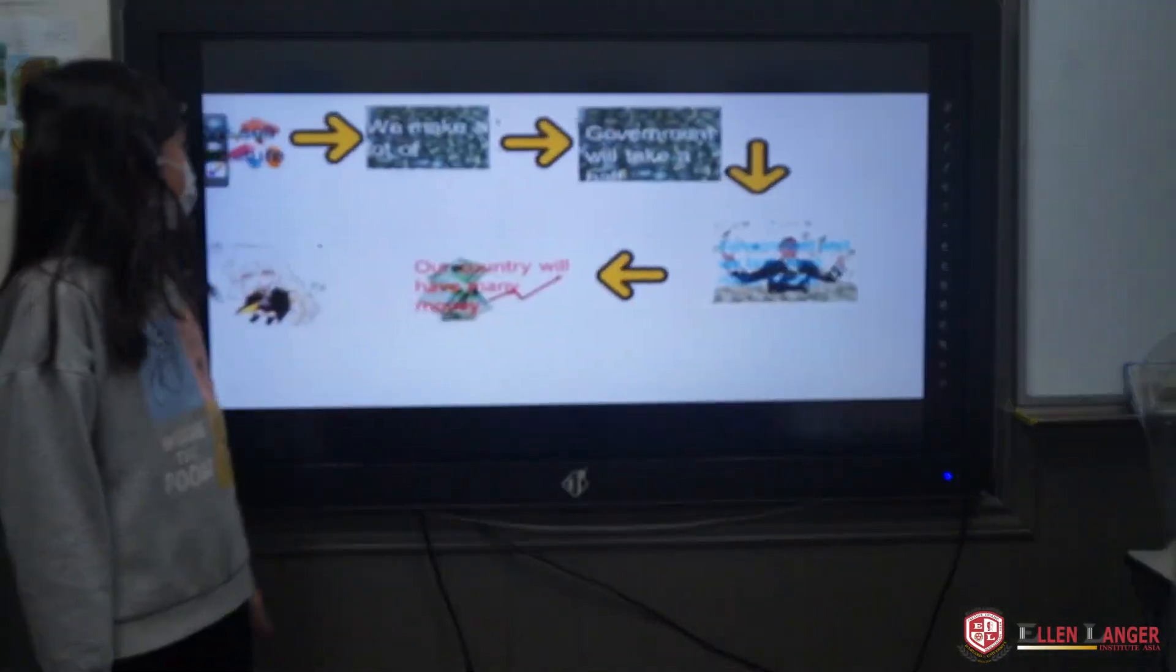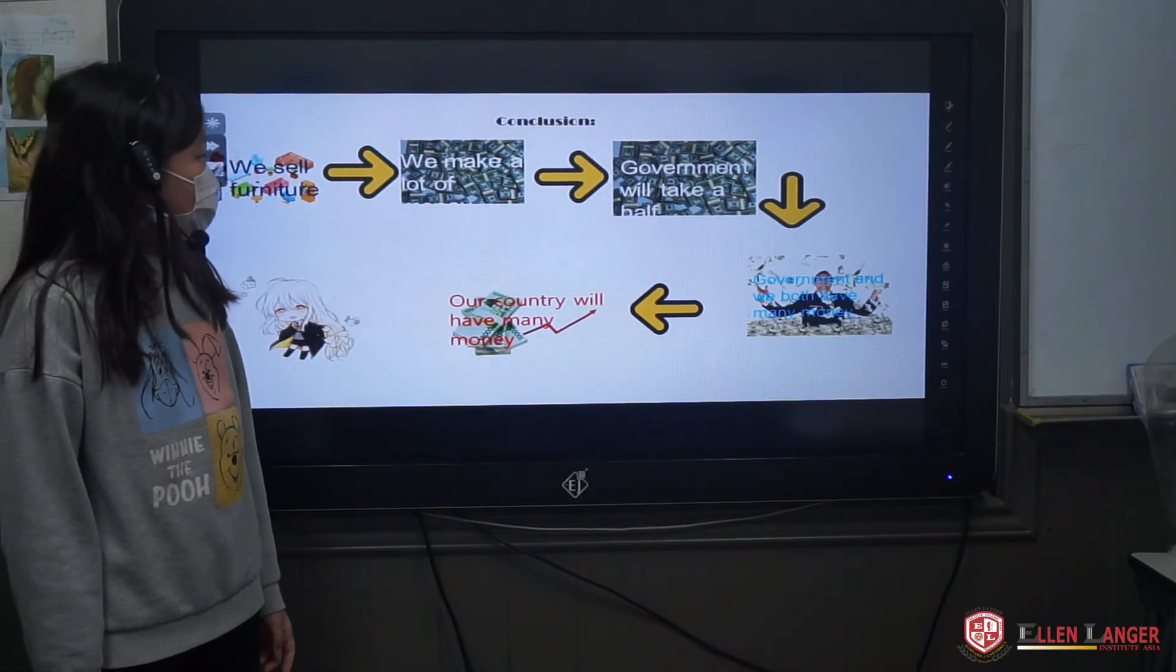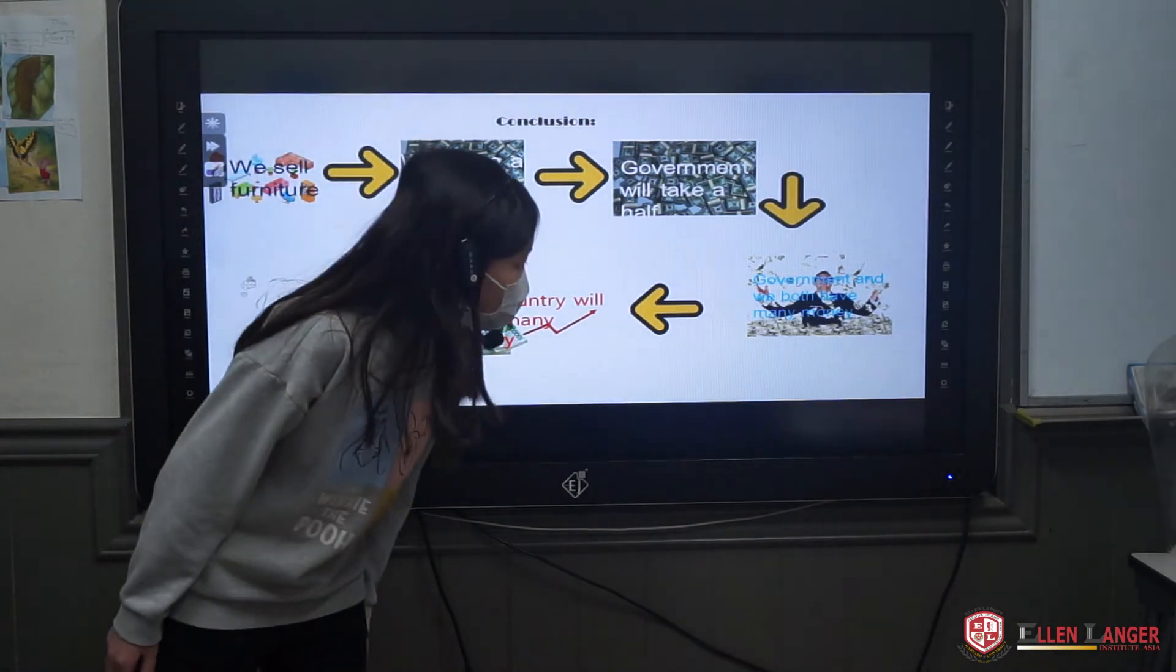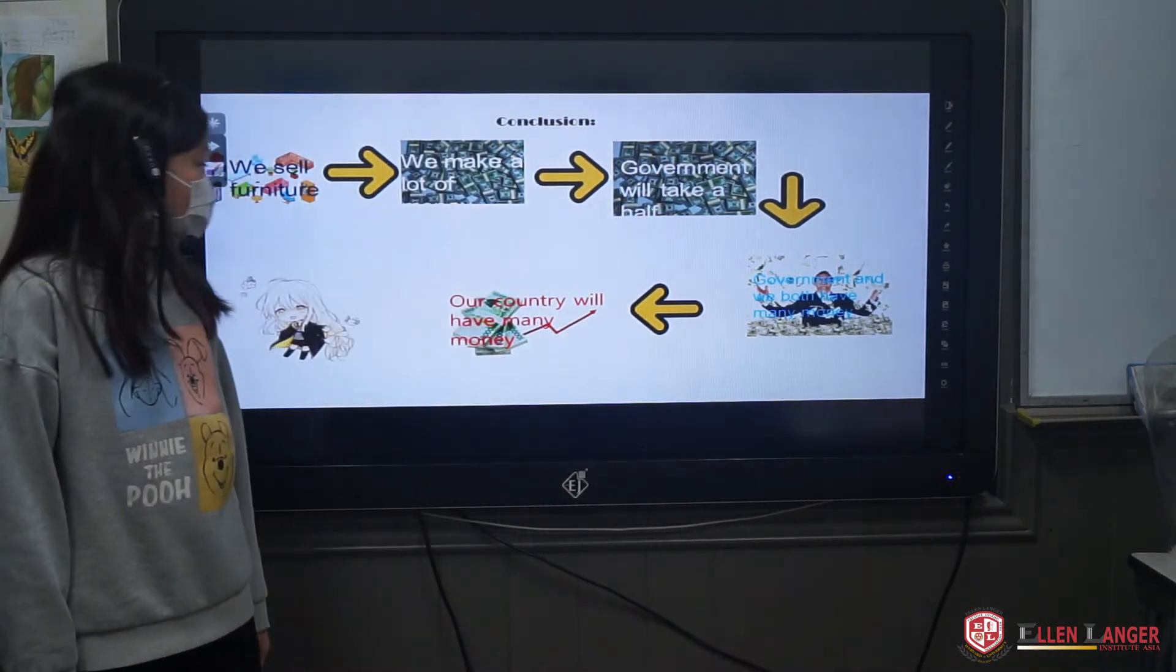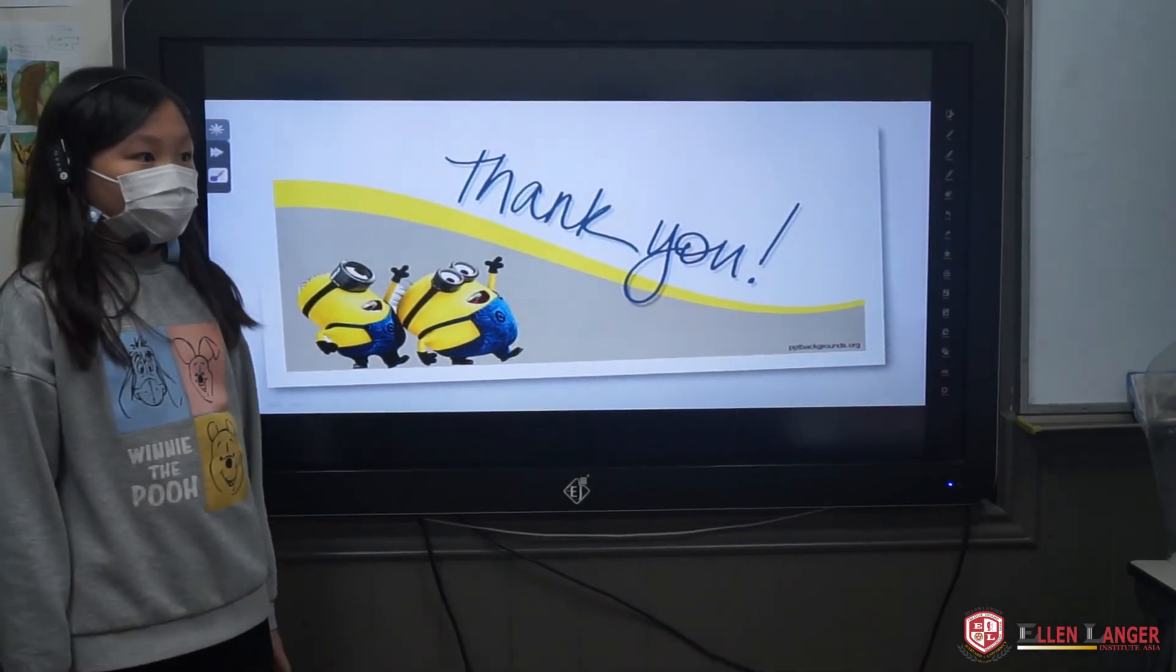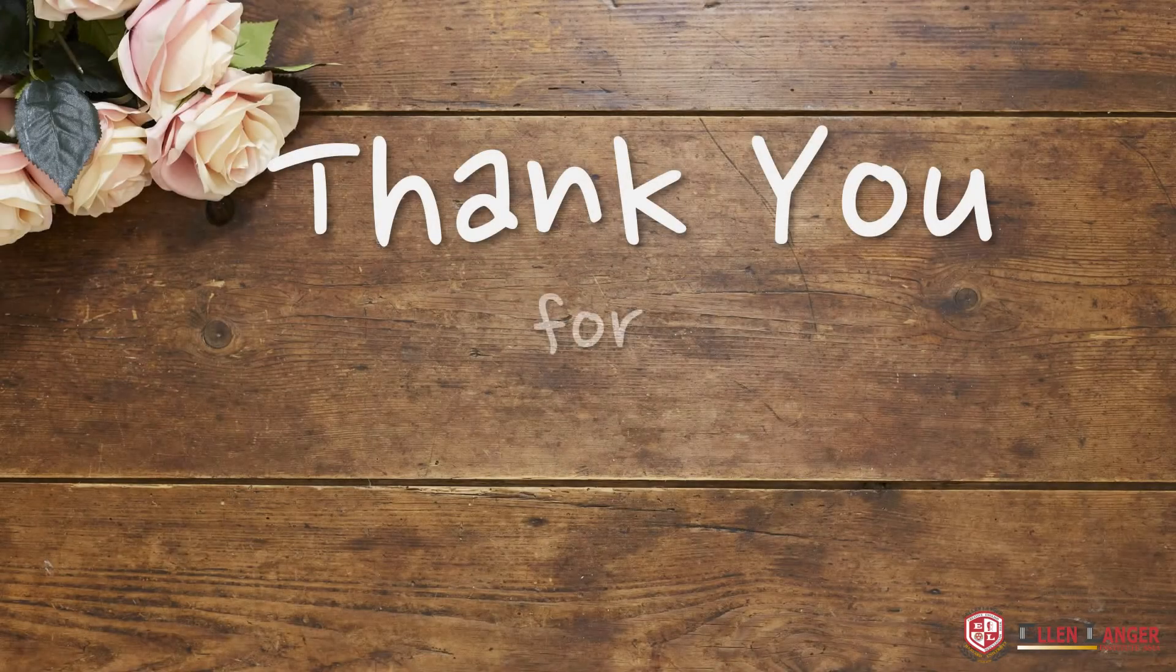In my conclusion, we sell furniture, we make a lot of money. The government will take the tax. The government and we both have money. Our country will have money. Thank you for listening.